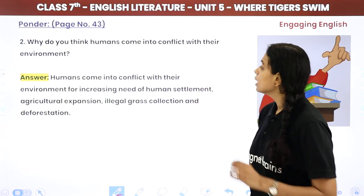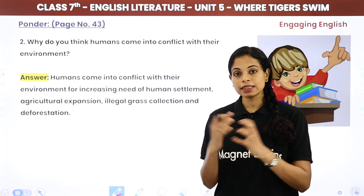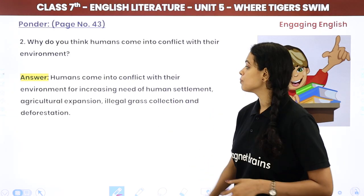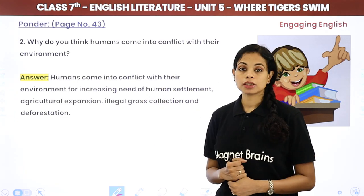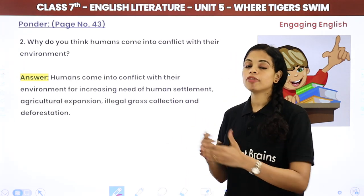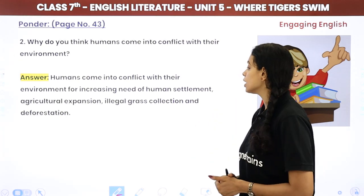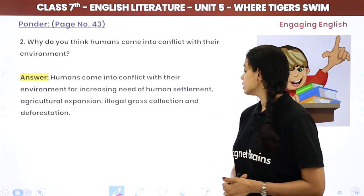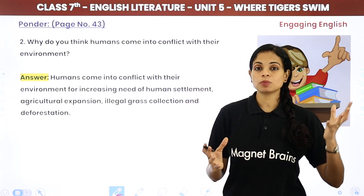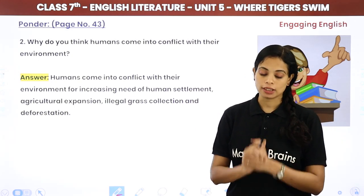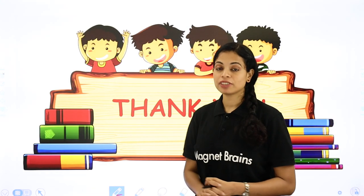Why do you think humans come into conflict with their environment? Humans come into conflict with their environment due to increasing need for human settlement, the need to clear forests, agricultural expansion, illegal grass collection and deforestation. In all these activities, humans and creatures — especially tigers — come into conflict. We are now done with the question answers of this chapter.